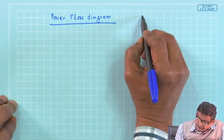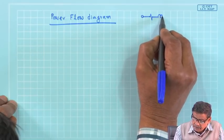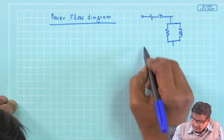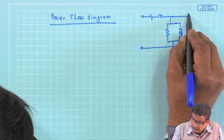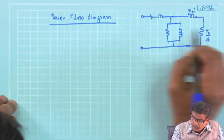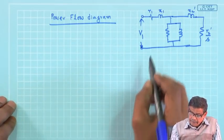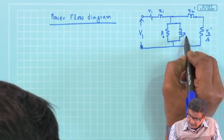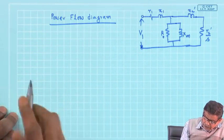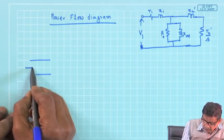In the induction machine, the exact equivalent circuit includes R₁ and X₁ on the stator side, a rotational loss resistance, and X₂ dashed and R₂ dashed divided by s on the rotor side. There is also Rₒ and the magnetizing reactance Xm. Using this circuit, we draw the power flow diagram starting with input power Pin.